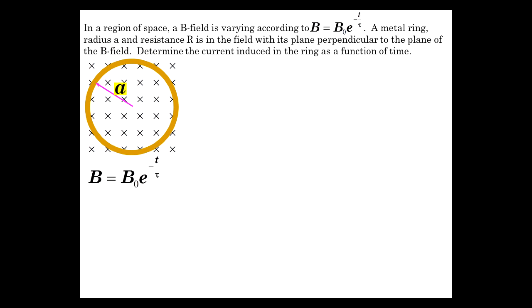Let's do a couple of quick but good examples. We have a region of space with a B field that's equal to B₀e^(-T/τ). And we've got a metal ring that's perpendicular to the plane orientation of the B field. So it's actually the area vector you could say is in the same direction.